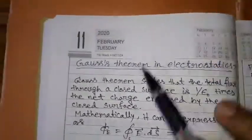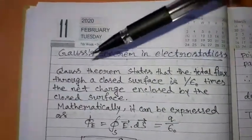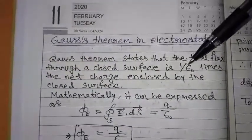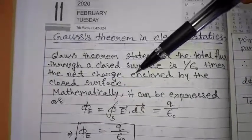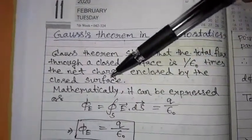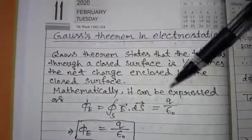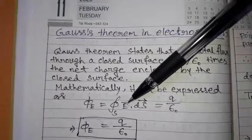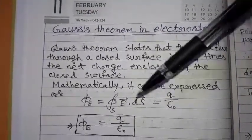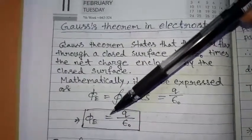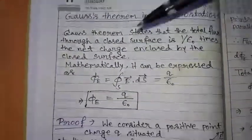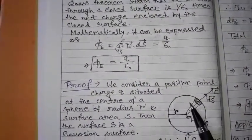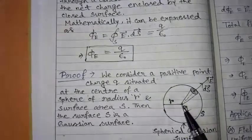Next topic is Gauss's theorem in electrostatics. Gauss's theorem states that the total flux through a closed surface is 1 by ε₀ times the net charge enclosed by the closed surface. Mathematically it is expressed as φ_E equal to the closed surface integration of E dot dS, equal to q by ε₀.